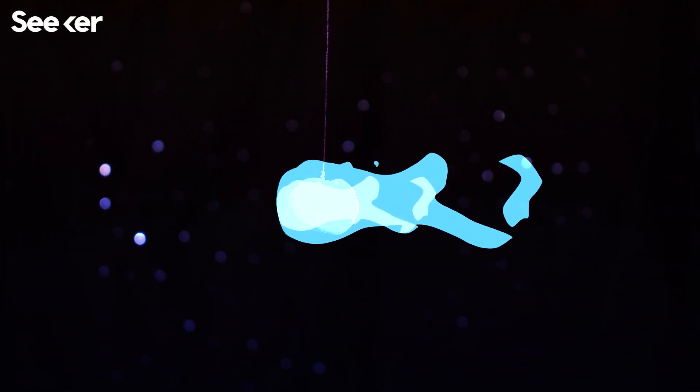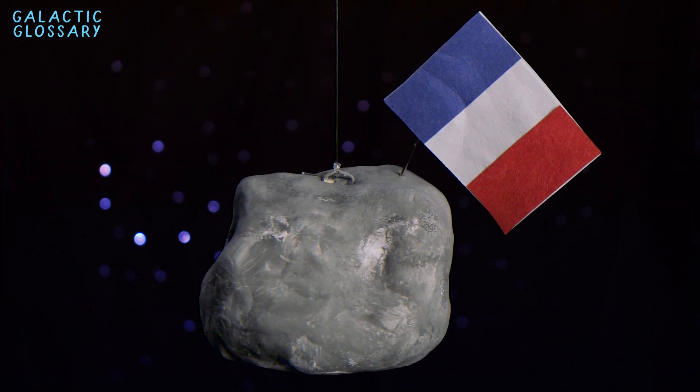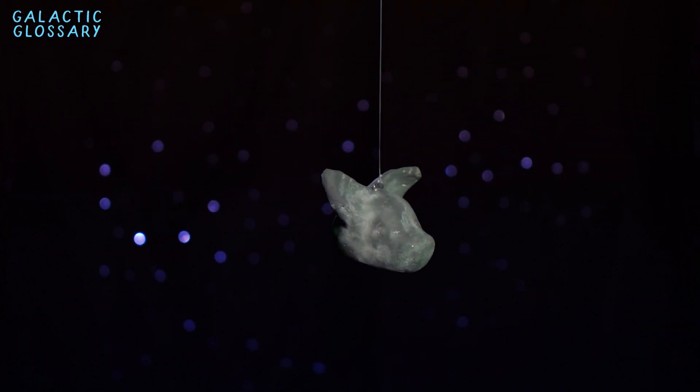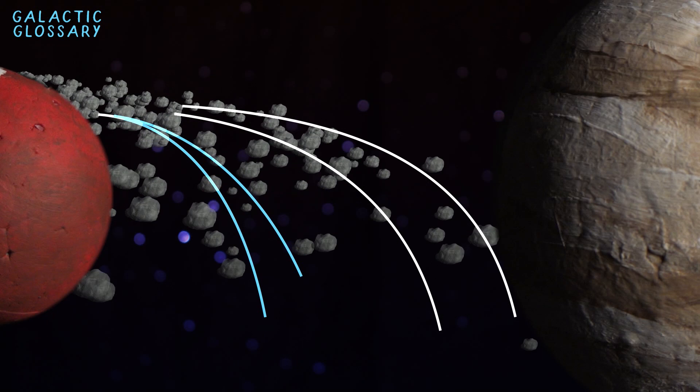If a comet were to shed its ice, it'd become an asteroid. These space rocks can be as big as an entire country, or as small as a chihuahua head. Most of the time, you can find them hanging out in the asteroid belt, a rocky superhighway between Mars and Jupiter.